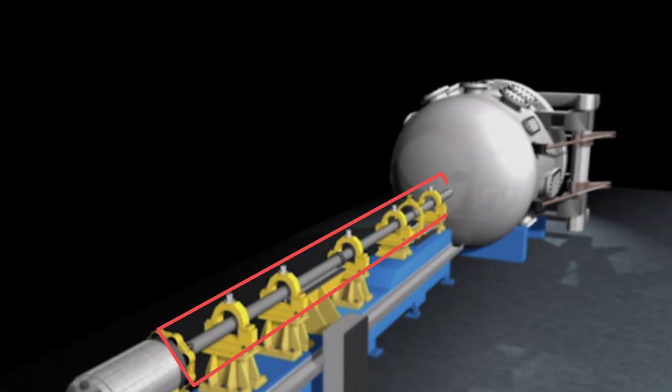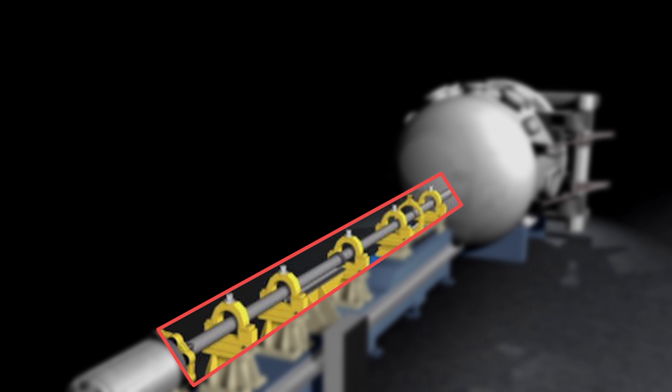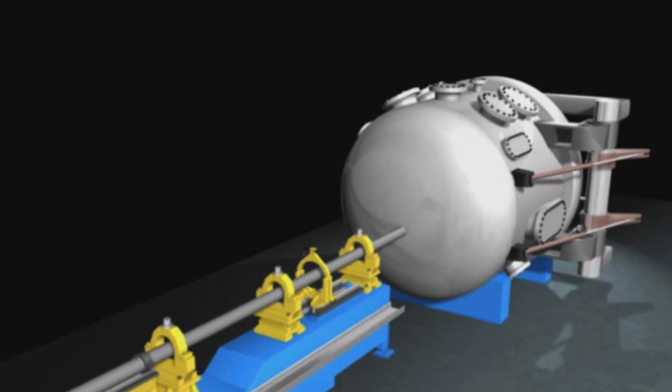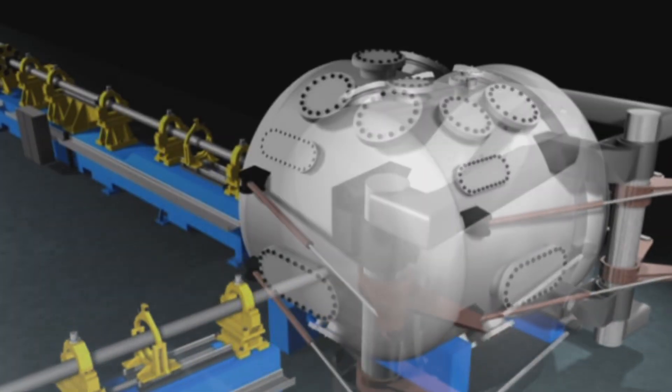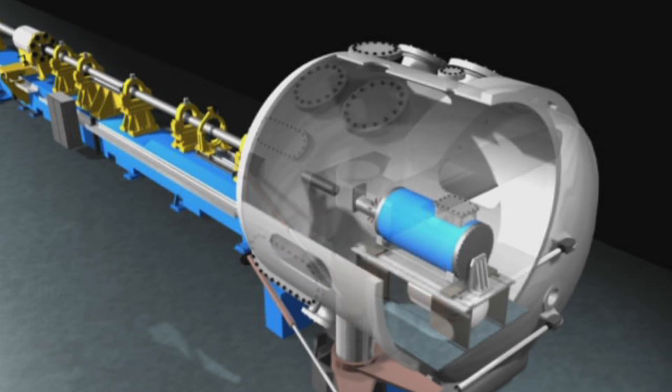The launch tube guides the high-velocity projectile to the actinide target. The nested confinement systems are at the end of the gun, where the experiment is located. The primary target chamber and the secondary confinement chamber ensure that no target materials escape following an experiment.